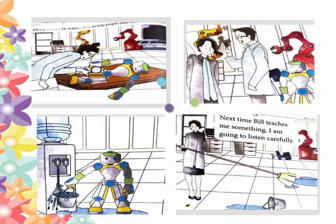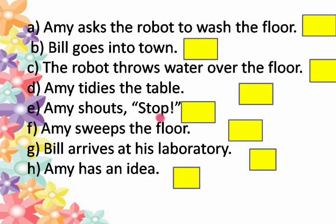Amy didn't know how to stop the robot. As Bill entered, he got angry and asked her to clean the mess. Amy realized her mistake and decided to listen to the instructions carefully. Students, let's see in which order the incidents took place.